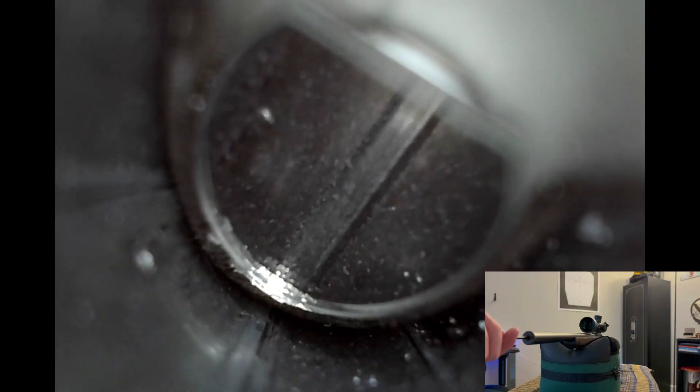One thing that stands out to me in the .22LR barrel is the larger presence of the small chunks of fouling as opposed to the streaking we saw with the .223. I assume that has to do with the choice of exposed lead tips being more susceptible to the physical contact it makes with the barrel as opposed to a jacketed cartridge.